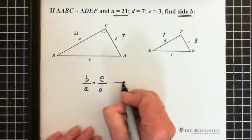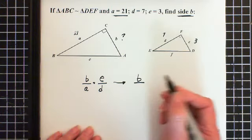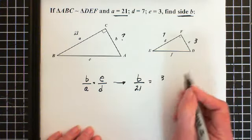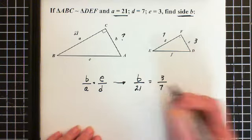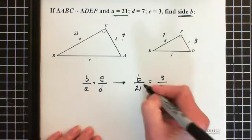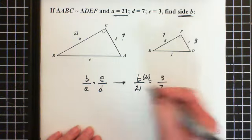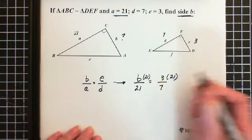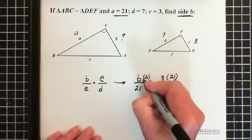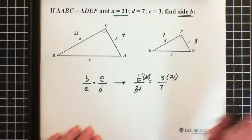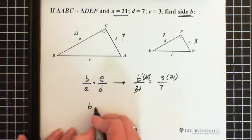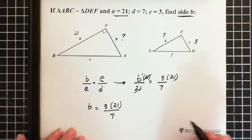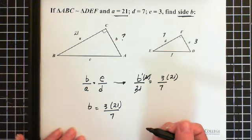So let's just set this up. We have B over A, which is 21, which equals E, which is 3, over D, which is 7. We're solving for B. So what we do is multiply this side by 21, just so we can get the 21 out of here. But if we multiply on this side by 21, we have to multiply over here by 21. 21 divided by 21 is 1, so we cancel these two, and we're left with 1. B times 1 is B. B equals 3 times 21 divided by 7. Now 21 divided by 7 is 3.